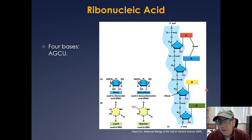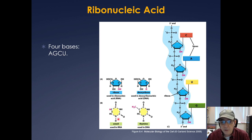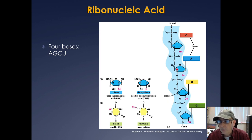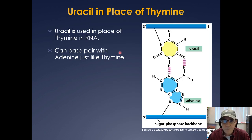Let's look at RNA in general. Ribonucleic acids are composed of four bases: A, G, C, and U, where uracil replaces thymine in DNA. The big difference in the ribose group is that in RNA you have the ribose with an OH, while in DNA it's deoxyribose. It's connected by a phosphodiester bond. Uracil is used in place of thymine, and it can base pair with adenine, just like thymine could base pair with adenine.